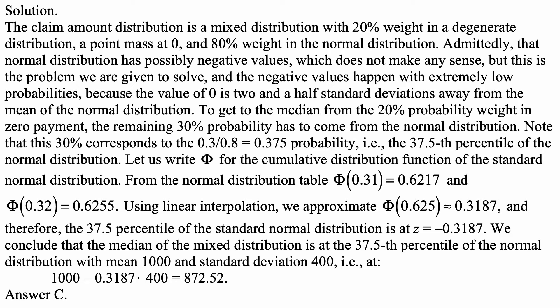Admittedly, that normal distribution has possibly negative values, which does not make any sense. But this is the problem we are given to solve, and the negative values happen with extremely low probabilities, because the value of zero is two and a half standard deviations away from the mean of the normal distribution — so a very, very small probability of below-zero values.